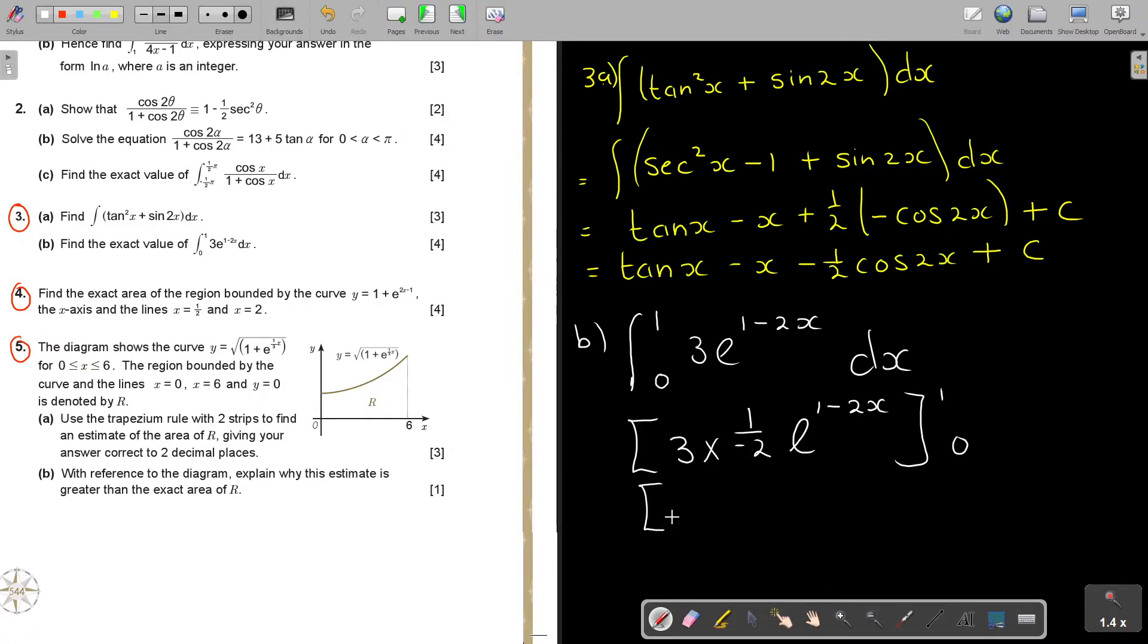And then it's 2, 1 and 0. So if I really want, it's not necessary, but I just will show you. It's 3 over 2, E, 1 minus 2X, 1 and 0.